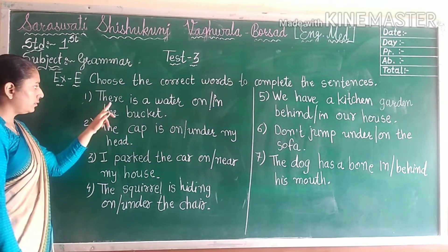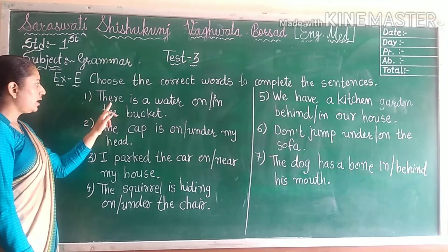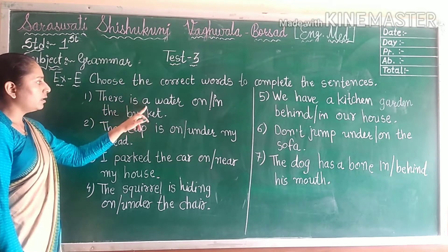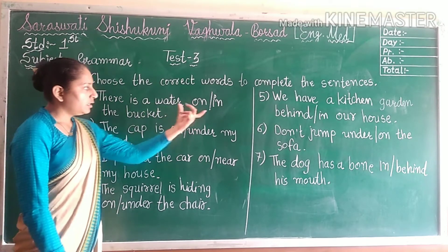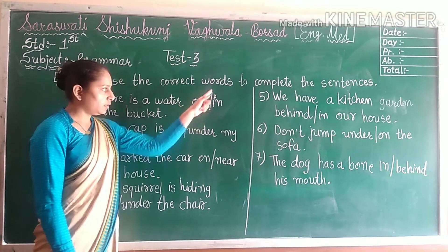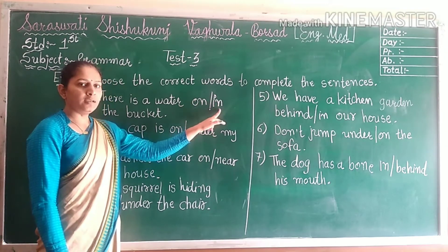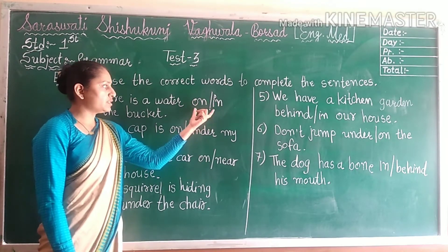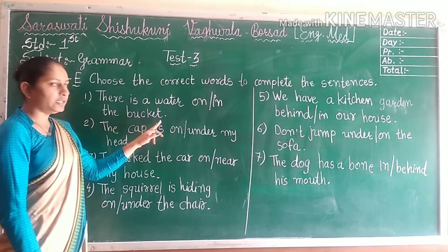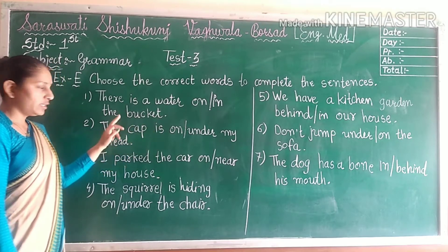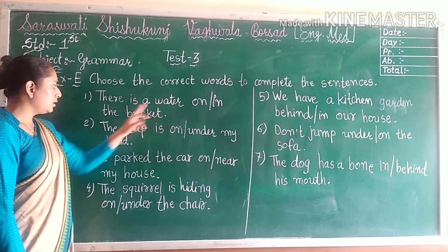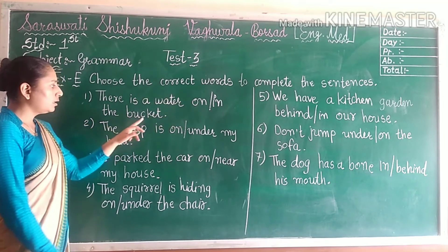First number. The first sentence is: There is a water — blank — the bucket. Two options are given: OF, ON, OB, or IN. So you have to choose one word. The bucket. So what is our first sentence? There is a water in the bucket.